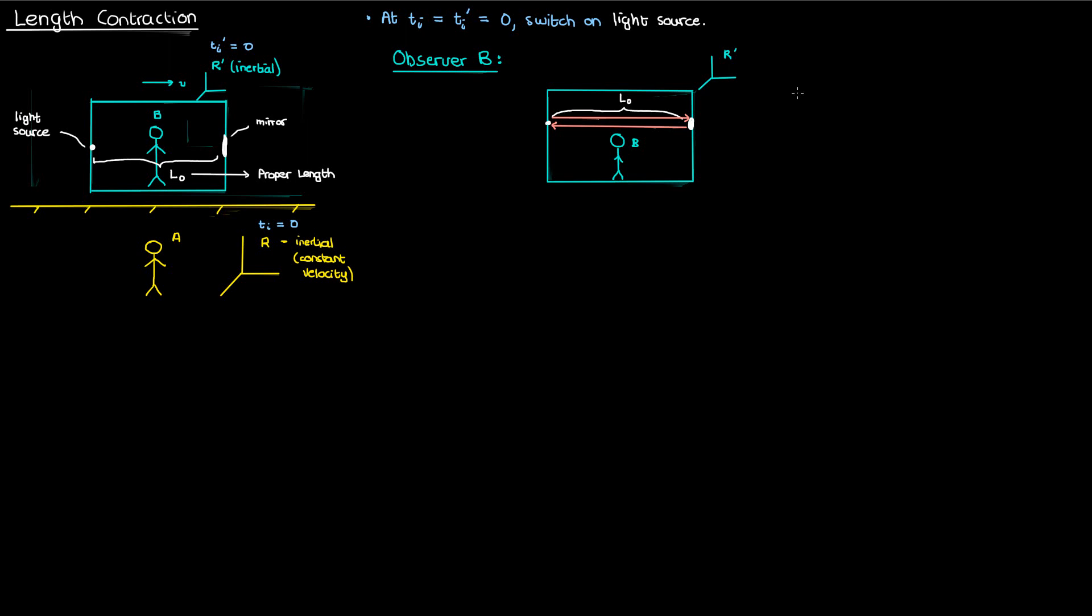According to observer B, the speed of the light ray is C, which makes sense. The distance the light ray travels is 2L0 because it goes 1L0 to the right and 1L0 to the left. Therefore the time taken by the light ray to go across the train and then come back is 2L0 over C. I'll call this equation 1.